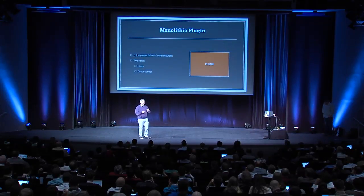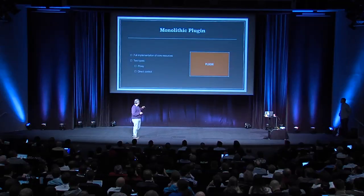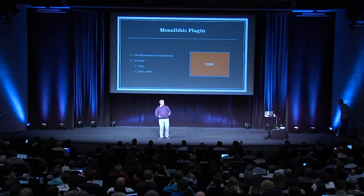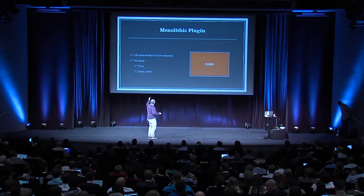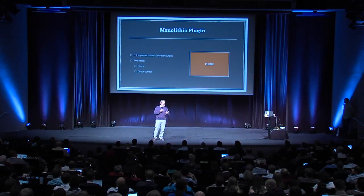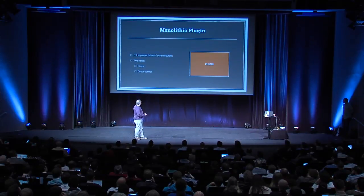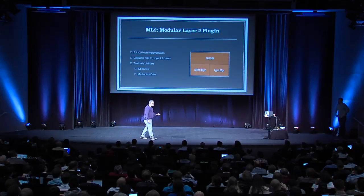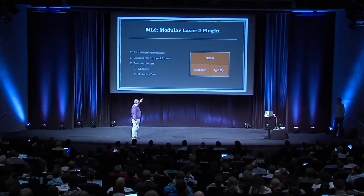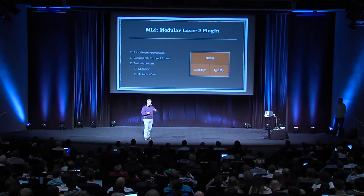The server runs a plugin. A plugin can be monolithic, and monolithic plugins are mostly two kinds: either it's a proxy towards a third-party system — for instance, OpenContrail or VMware NSX — or it can be a direct control where the plugin implements the management and control plane for your network virtualization solution. If you don't want to use a monolithic plugin, there is also the option of using the ML2 plugin, or Modular Layer 2 plugin, which is still a full plugin implementation. From the outside it could be considered as a monolithic, full-control plugin.